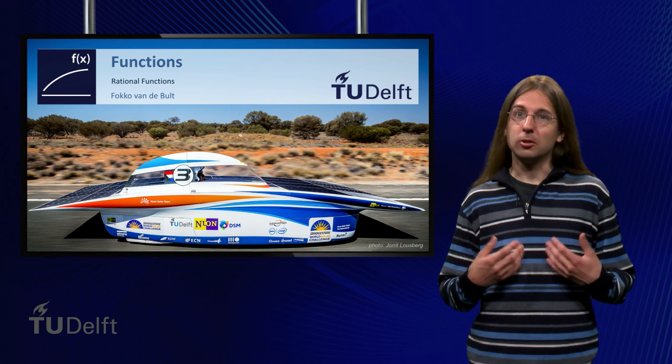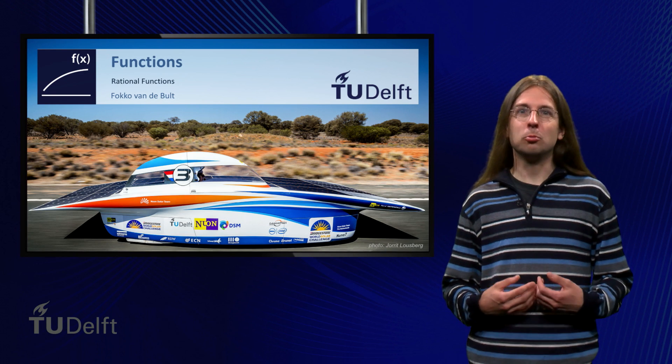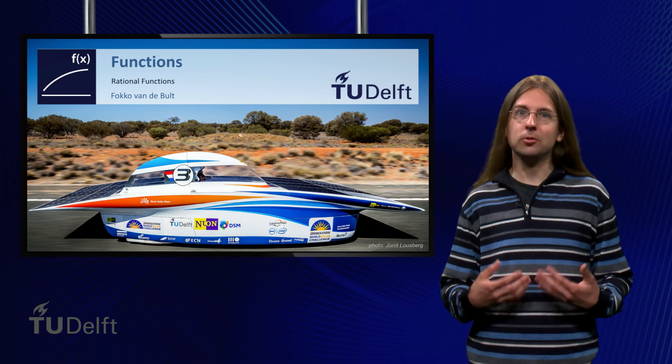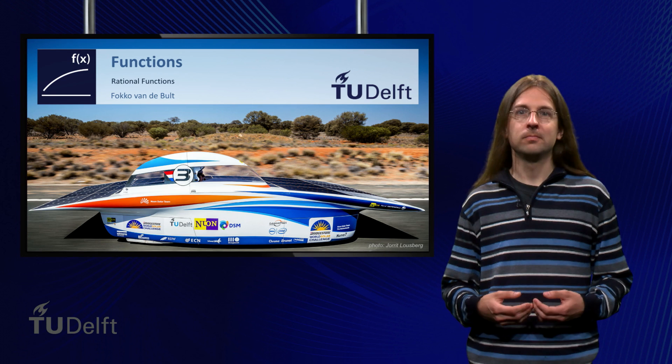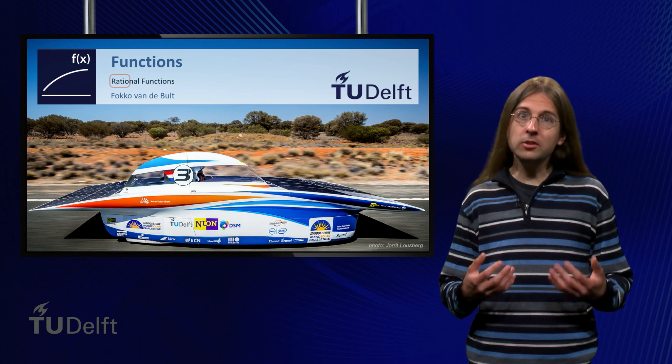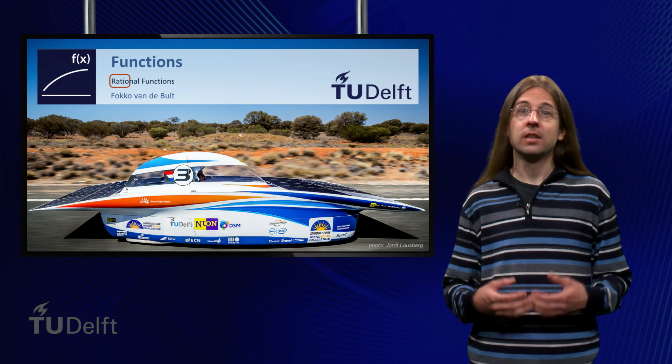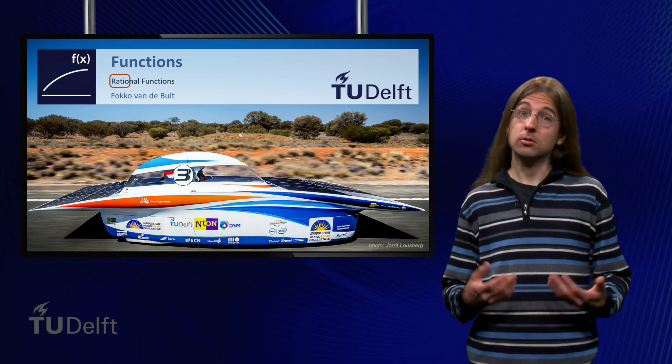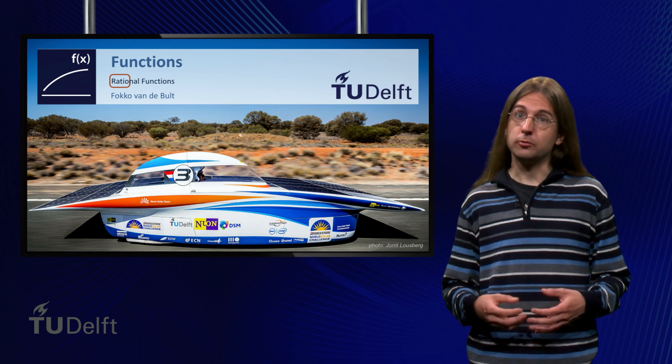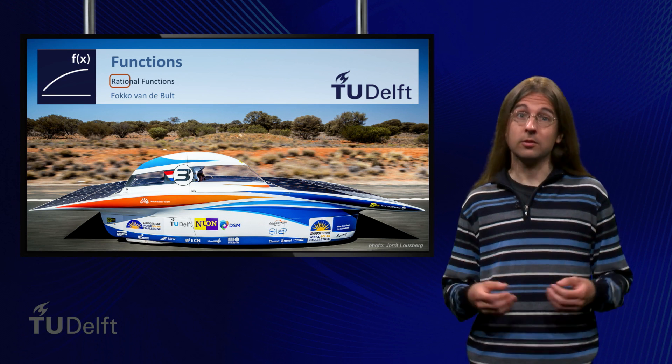Hello. The quotient of two quantities is called their ratio. A rational function is the quotient, or ratio, of two polynomials.